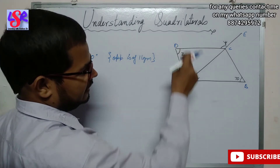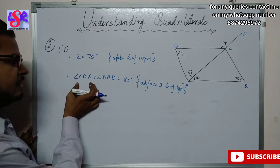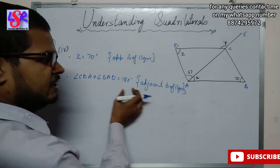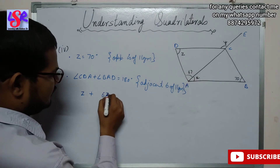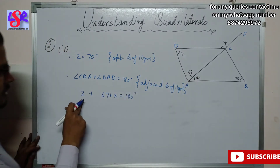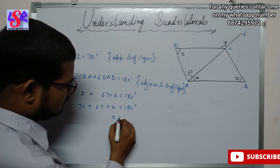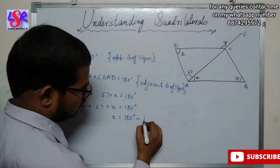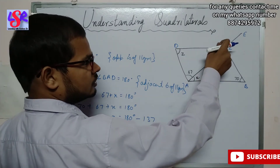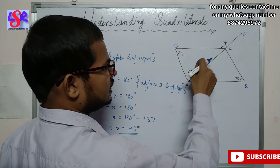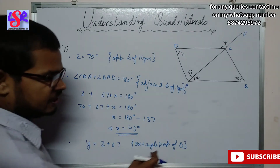Adjacent angles of a parallelogram are supplementary, so angle CDA plus angle BAD equals 180 degrees. Placing the values: Z plus 67 plus X equals 180 degrees. With Z as 70: 70 plus 67 plus X equals 180, so X equals 180 minus 137, giving X equals 43 degrees. For Y: this angle is the exterior angle of the triangle, so Y equals Z plus 67 by the exterior angle property of a triangle.